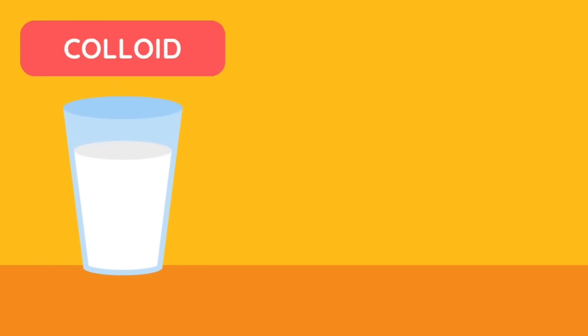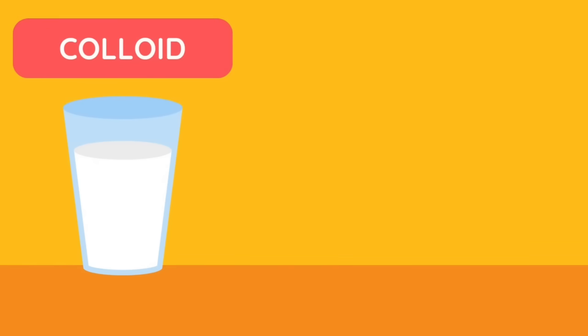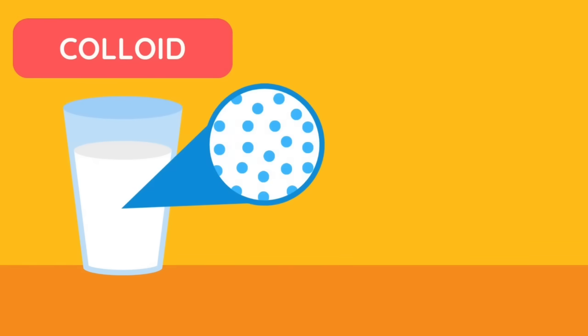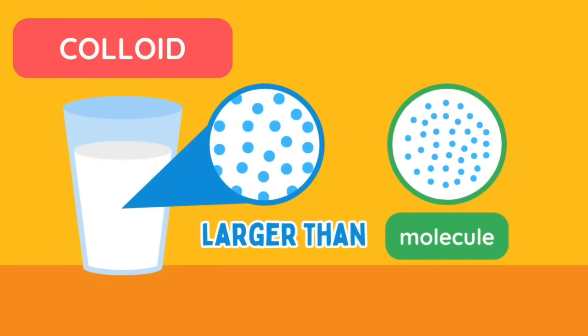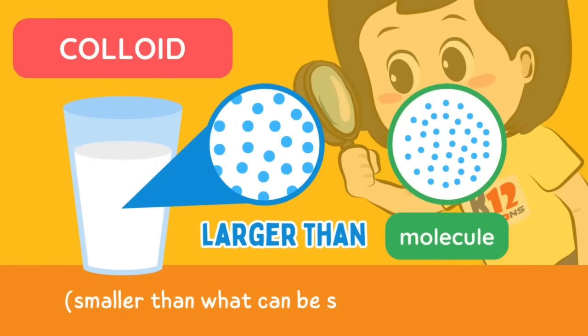To be classified as a colloid, the substance in the dispersed phase must be larger than the size of a molecule but smaller than what can be seen with the naked eye.